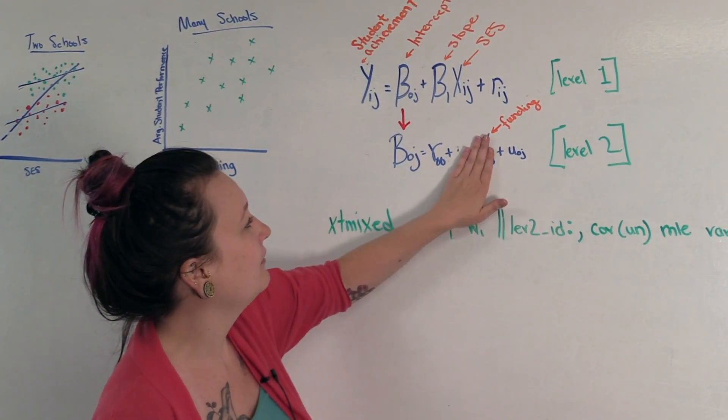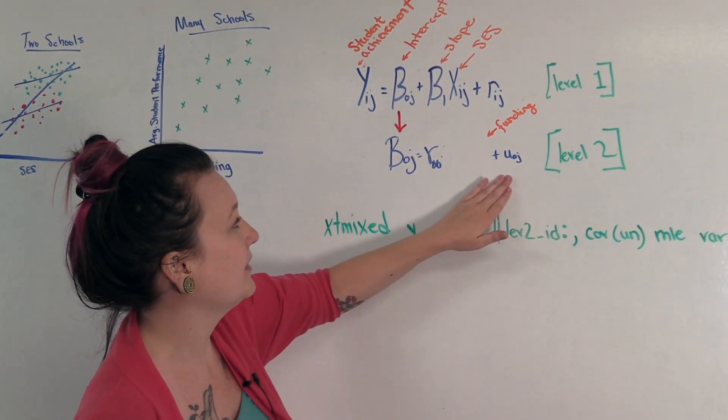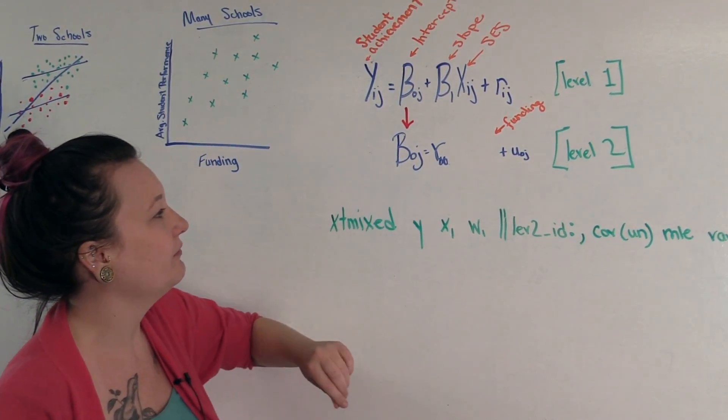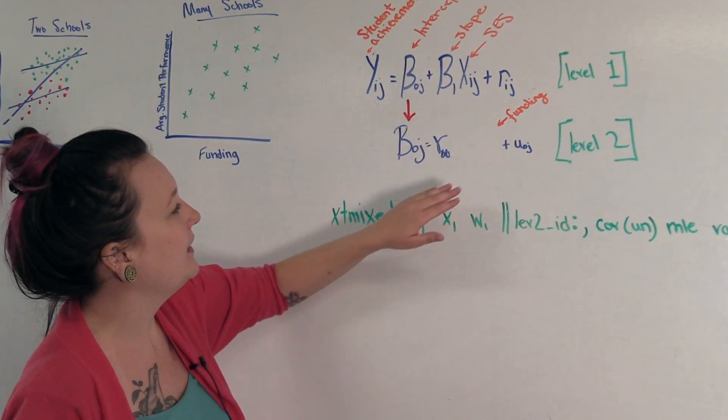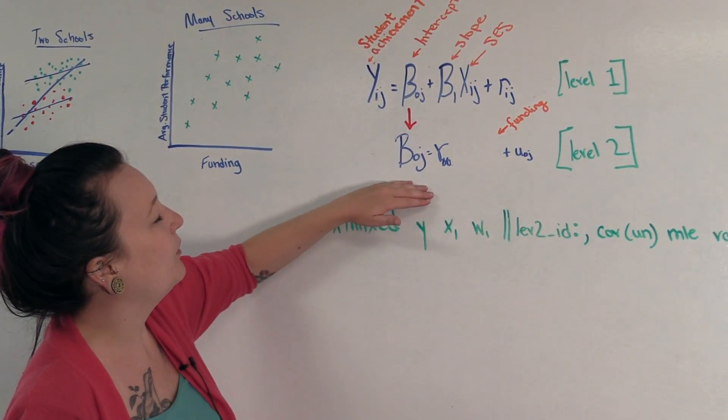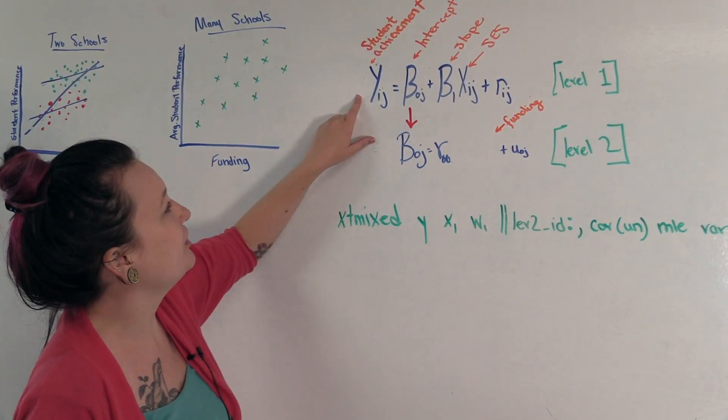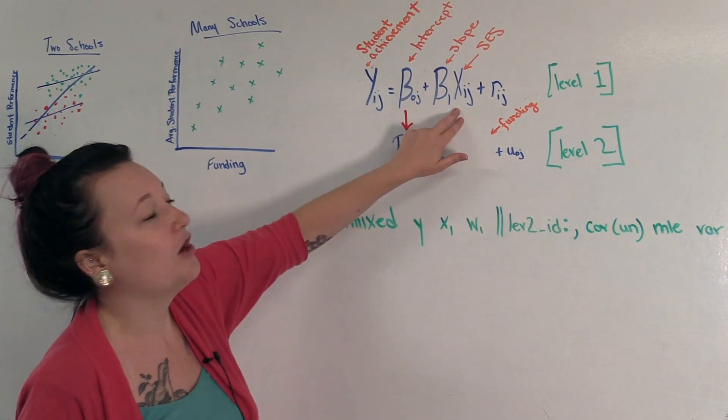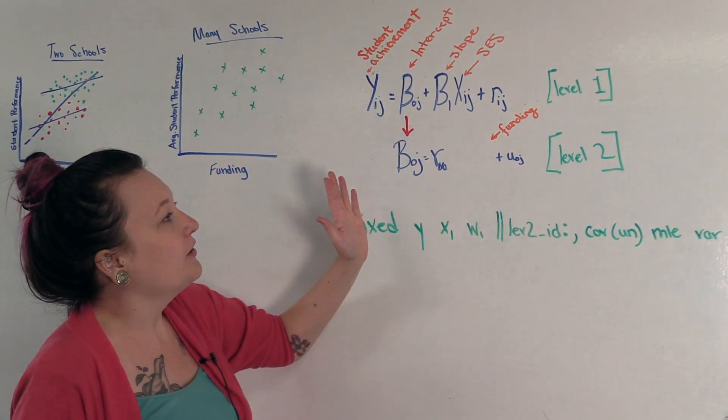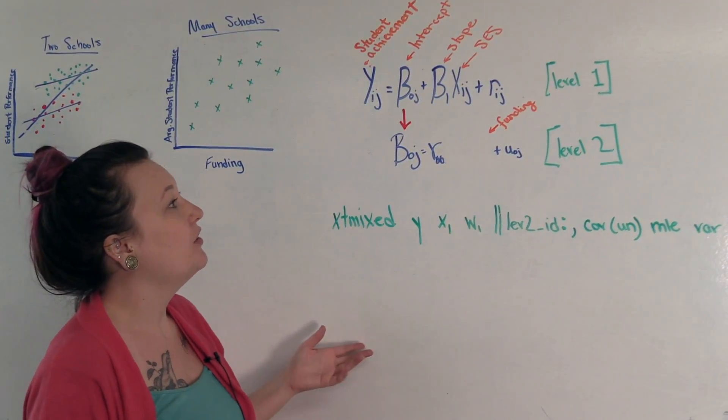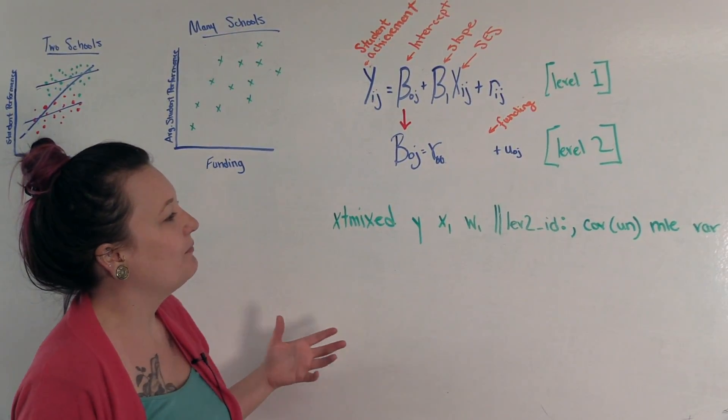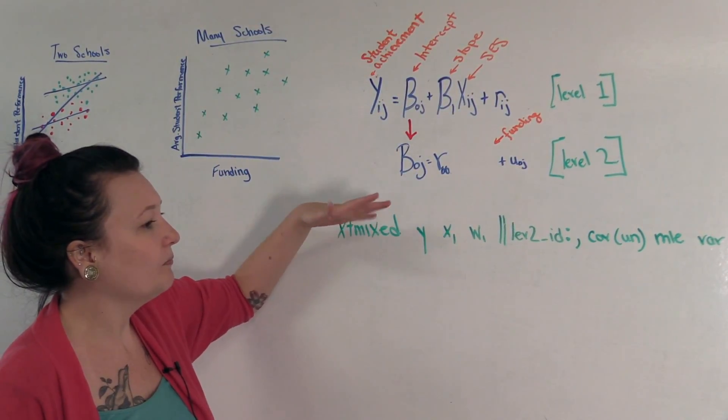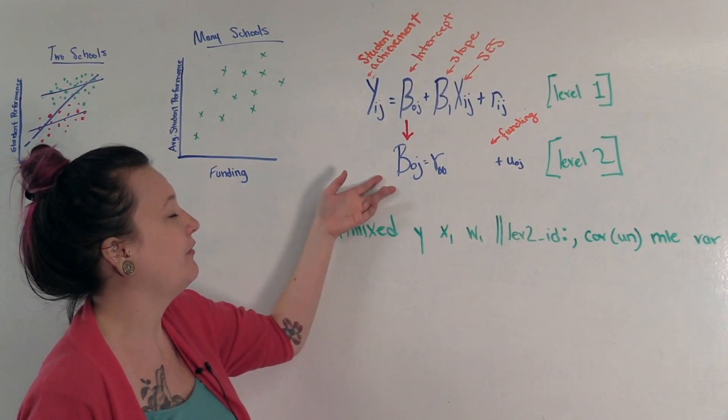So if we had no level two predictors, which you can certainly do that, it still fixes the within clustering or within level two unit clustering, but still doesn't include a predictor. In this case, if we were to think about what the intercept means, it would be the student achievement for a student in school j when they have no SES. And there is unlikely to be many students in a school with no SES whatsoever.